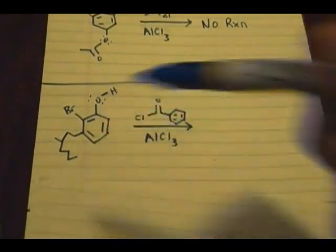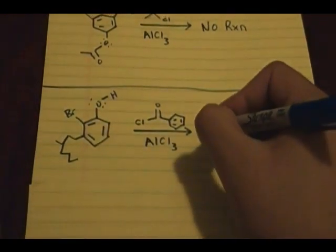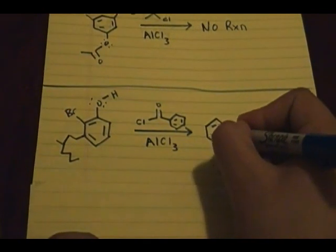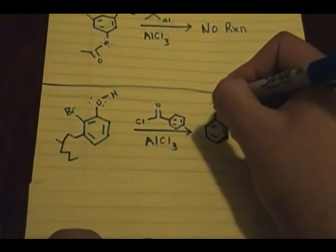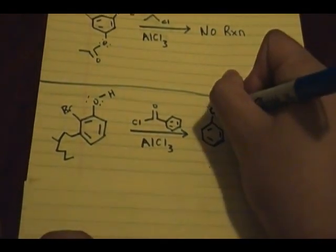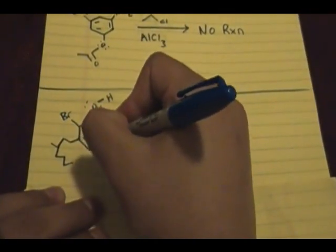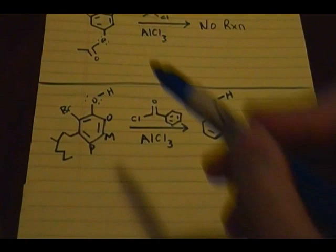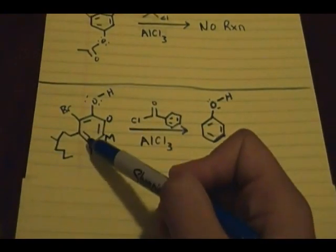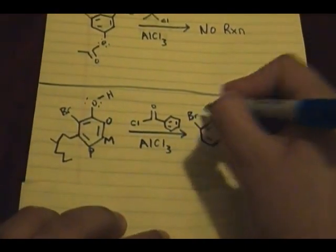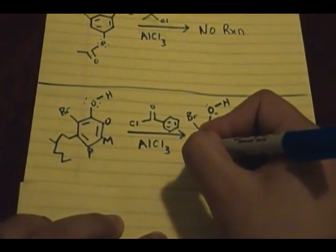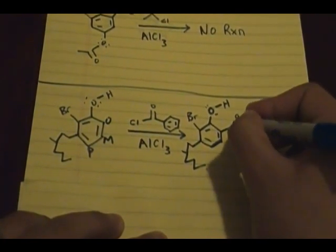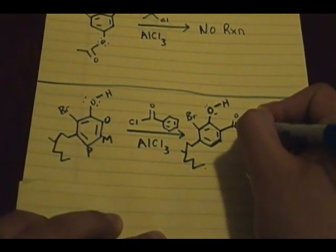This will direct it to the ortho and para position. So the products of this reaction will be, it's actually a pretty large structure. You have this aromatic ring, right? You have this O with those lone pairs right there. Let's label them, O, M, P. Well this ortho position is already occupied by the bromine. You cannot do anything in that position. So you could have the incoming group attached here and here. One product you'll have is this, you have this weird looking alkyl group.